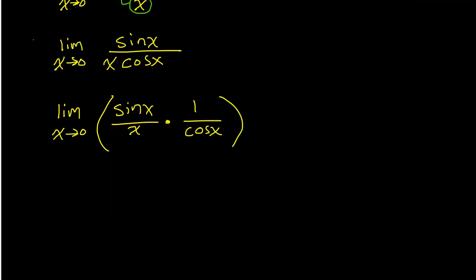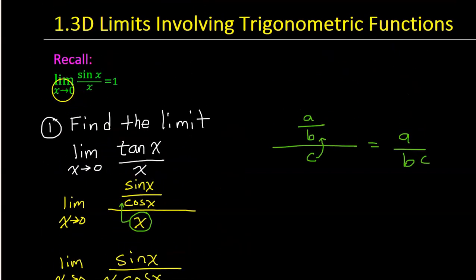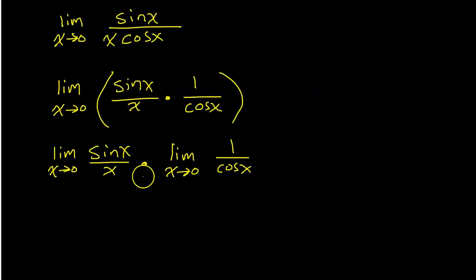Now we've learned that when you have the limit of a product, you can take the limit of each part separately and then multiply. So we can do the limit as x approaches 0 of sin(x) over x times the limit as x approaches 0 of 1 over cos(x). Now, this first part is what we were shooting for. The limit as x approaches 0 of sin(x) over x. We have memorized that that limit is equal to 1. So this is just going to be 1 times the other limit.